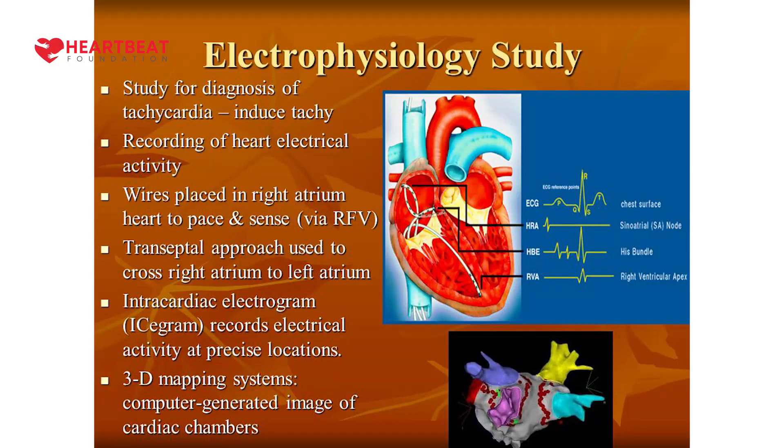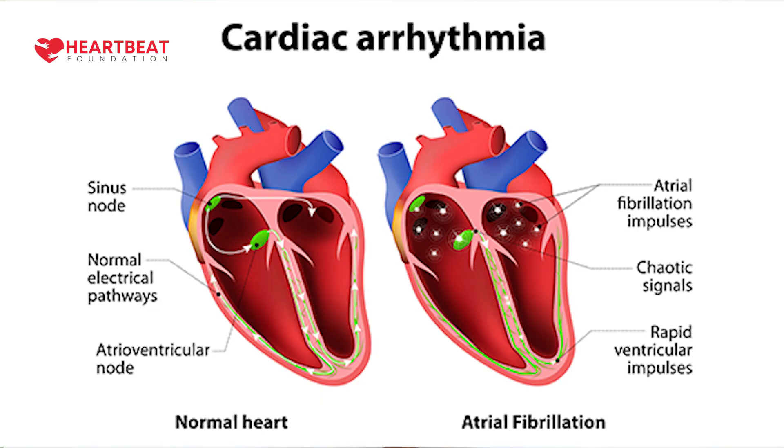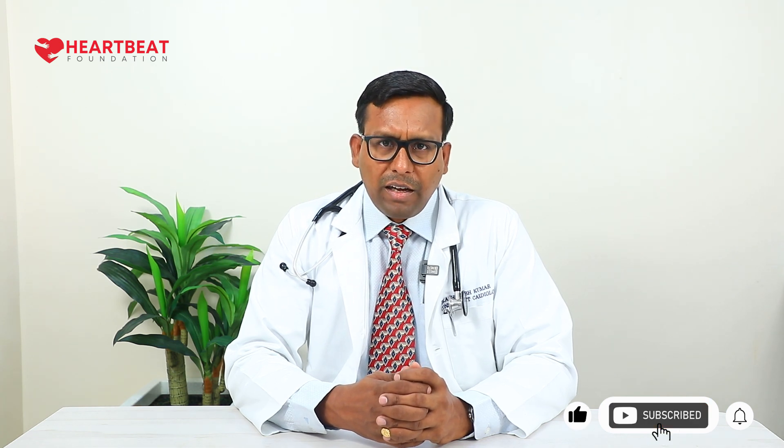Sometimes, in particular situations where we are in doubt or the patient has an electrical abnormality that needs invasive evaluation, we perform what is called an electrophysiology study. In these studies, we place wires inside the heart and check whether the electrical flow is normal or abnormal. We also perform protocols to intentionally bring on the arrhythmia — reproducing the same palpitation-related complaints during the EP study — and trace where it is coming from.